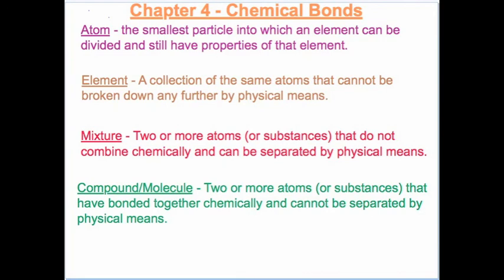An atom is the smallest particle into which an element can be divided and still have properties of that element. For example, if you have gold and keep cutting it smaller and smaller, it'll retain the properties of gold. But if you get down to an atom of gold and cut it further into the protons, neutrons, and electrons, it no longer has the properties of gold.